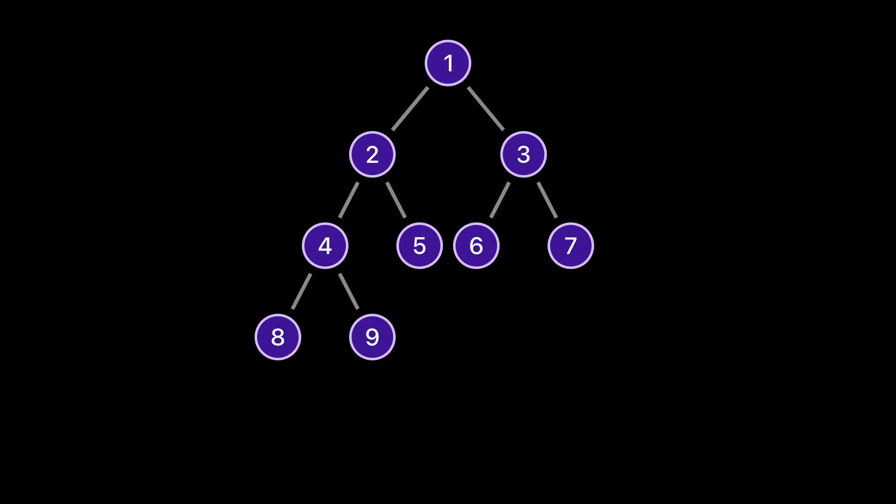The tree has two paths with the length of 3. One path from the root node to node 8, and the second path is from the root node to node 9.